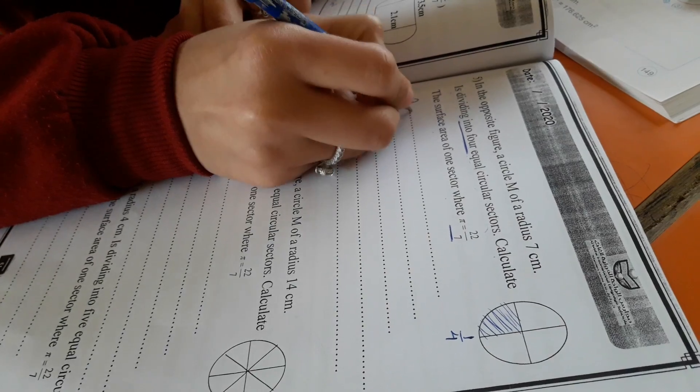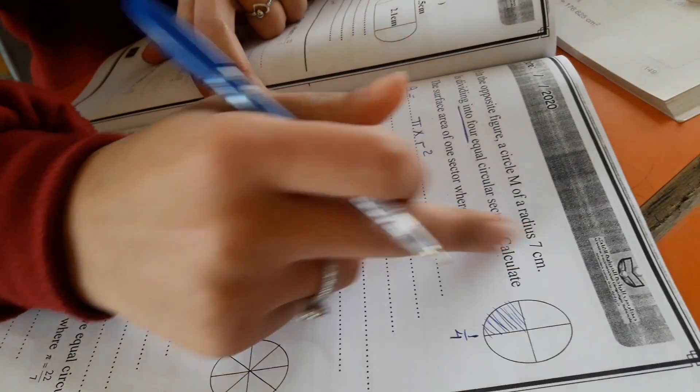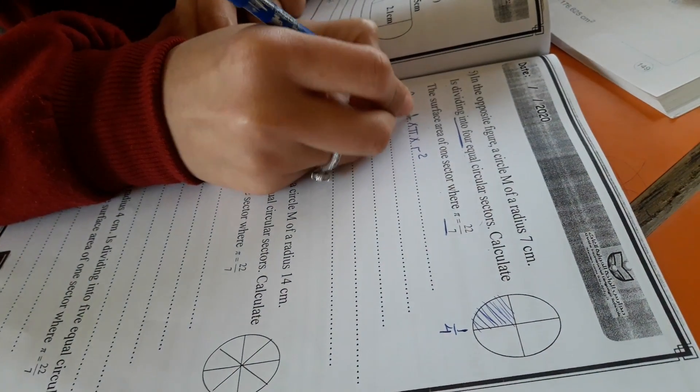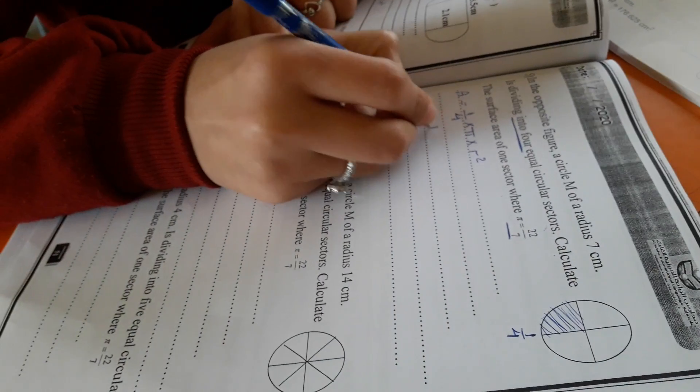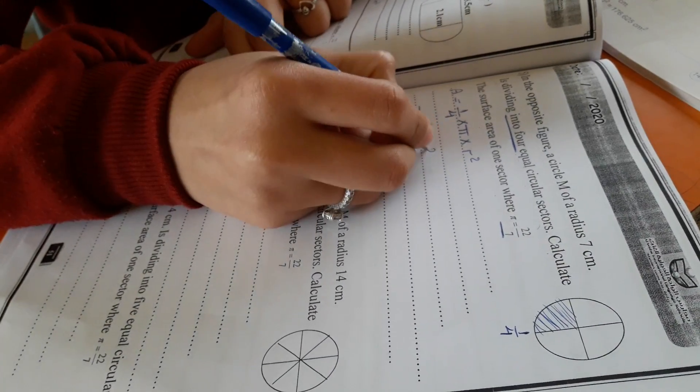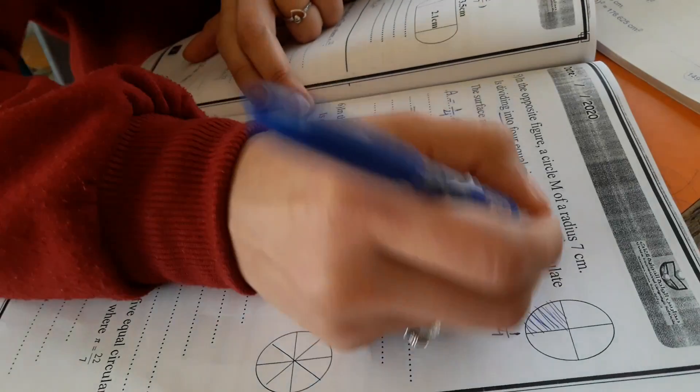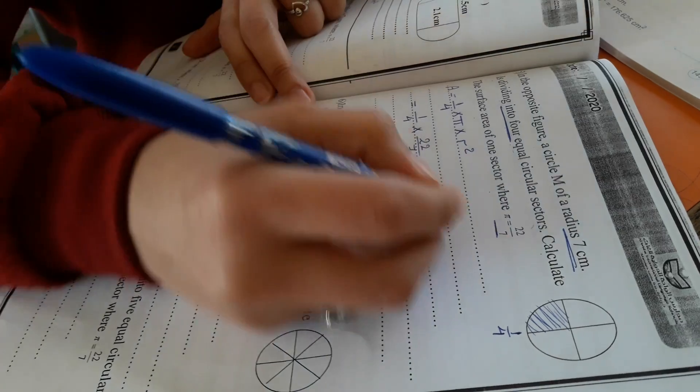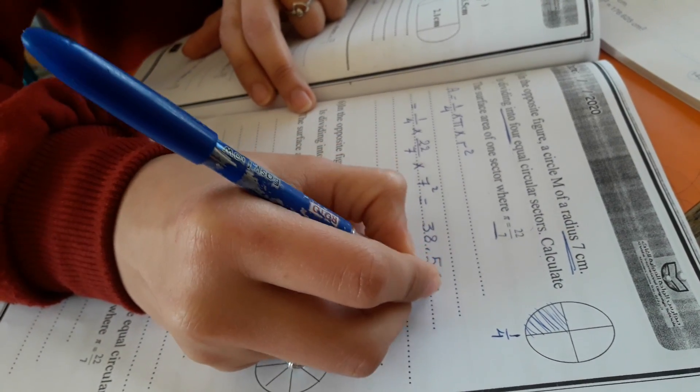Area equals pi times r to the power 2. But here, this whole circle or quarter of circle? So we should put at the first, quarter of circle. Equal quarter times 22 over 7 times r equal what? 7 centimeters, 7 to the power 2, equal 38.5 square centimeter.